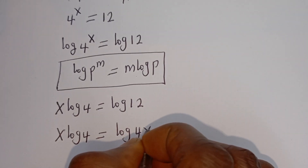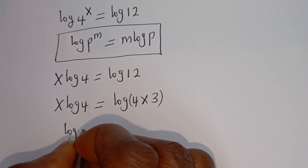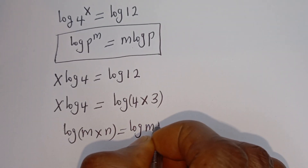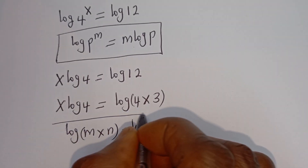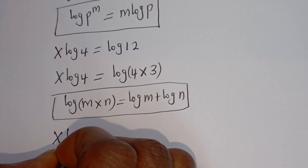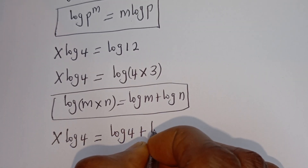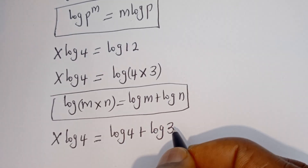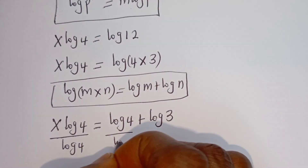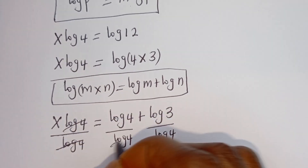S times log 4 is equal to log 12. Take note that if you have log of M times N, this equals log M plus log N. So log 12 equals log 4 plus log 3. Then dividing both sides by log 4, the log 4 terms cancel.